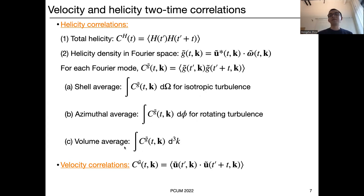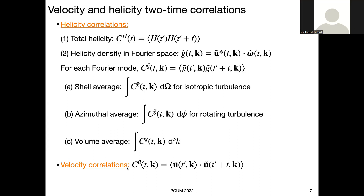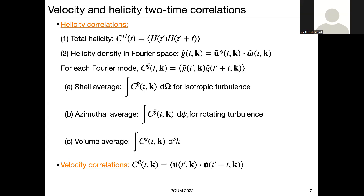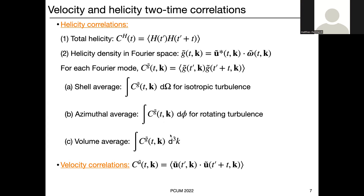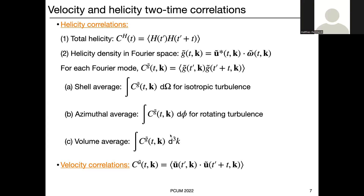In equations: definition one is the correlation of the total helicity — compute the total kinetic helicity in the box and compute its autocorrelation function. Definition two, corresponding to the renovating flow model, is to Fourier transform the velocity field and vorticity field omega, dot them in Fourier space to get G — the helicity density in Fourier space (different from the Fourier transform of real-space helicity density) — then compute the autocorrelation of G. We perform shell averages for isotropic turbulence, azimuthal averages for rotating turbulence respecting axisymmetry, and volume averages. This omega is also in Fourier space.